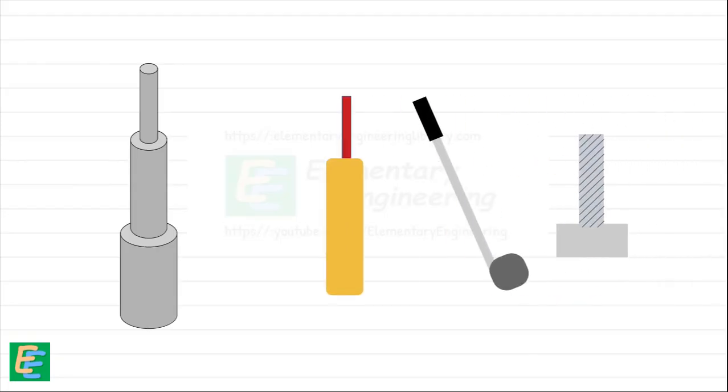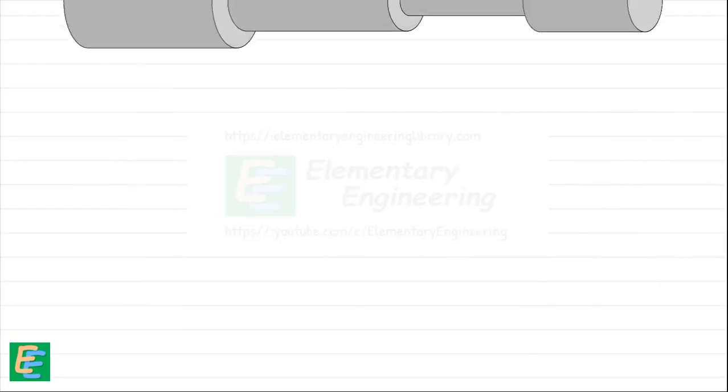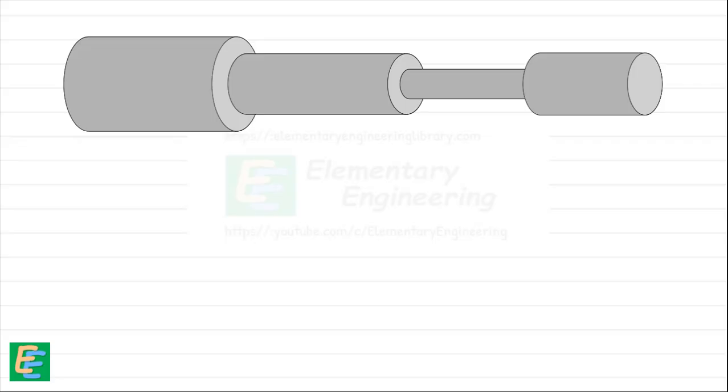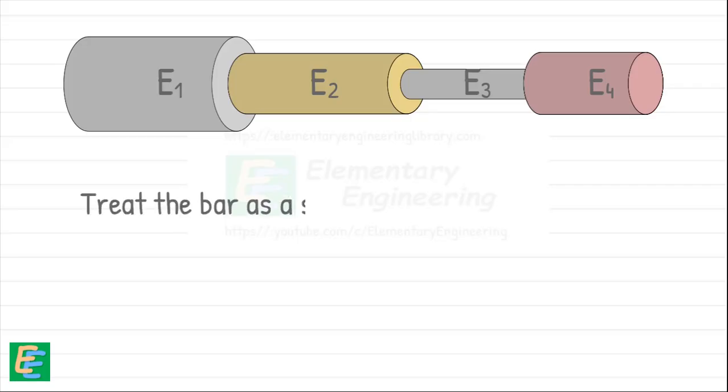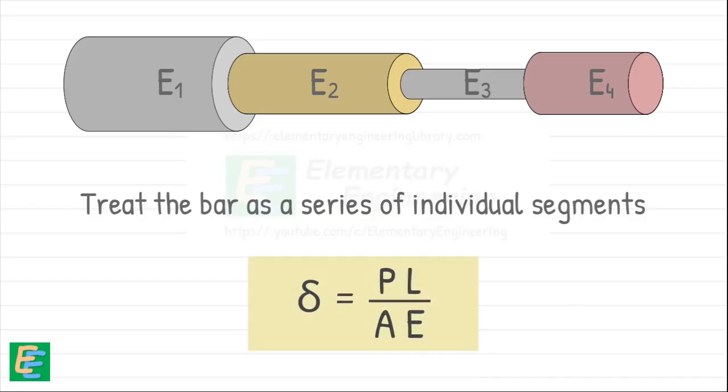But in the real-world structures, bar and materials are rarely uniform throughout. What if the bar has different thicknesses along its length? What if it is made up of different materials welded together, each with different stiffness? For such cases, we treat the bar as a series of individual segments and apply our deformation formula to each segment separately.